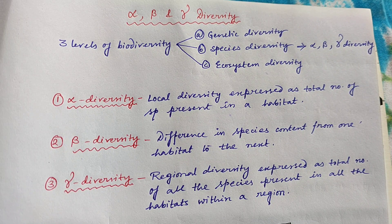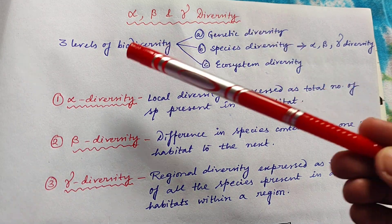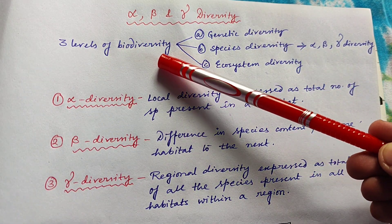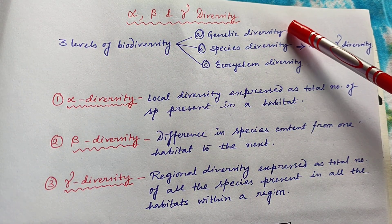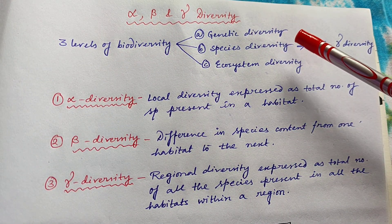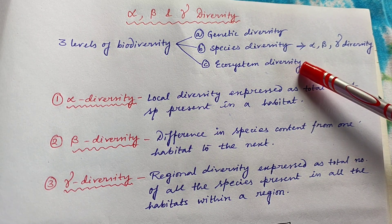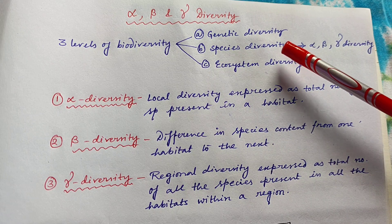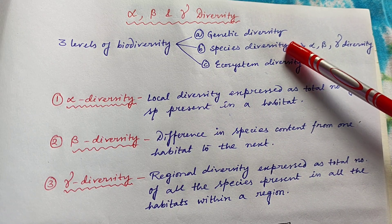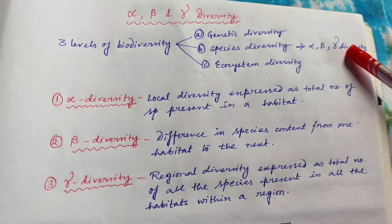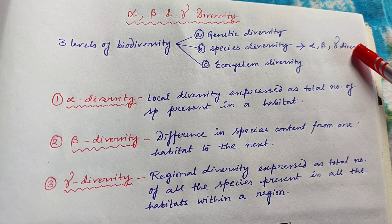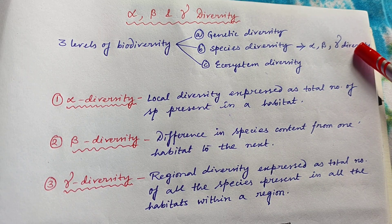So first of all, there are three levels of biodiversity. The first one is genetic diversity, the second one is species diversity, and the third one is ecosystem diversity. And under species diversity, we get three components of biodiversity known as alpha, beta and gamma diversity.